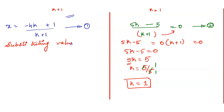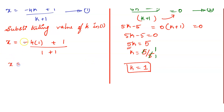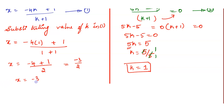Substituting k = 1 into the first equation: x = (-4·1 + 1) / (1 + 1) = (-4 + 1) / 2 = -3 / 2. So the x value is -3/2.